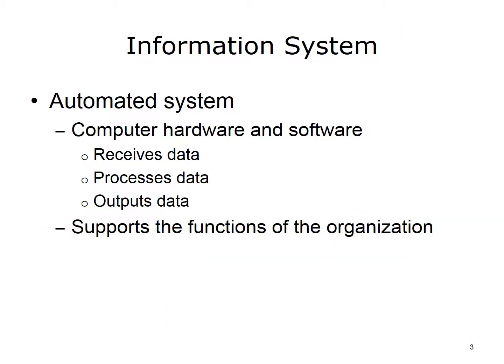Let's begin with a definition of an information system. The American Health Information Management Association, AHIMA, defines an information system as an automated system that uses computer hardware and software to record, manipulate, store, recover, and disseminate data — that is, a system that receives and processes input and provides output.